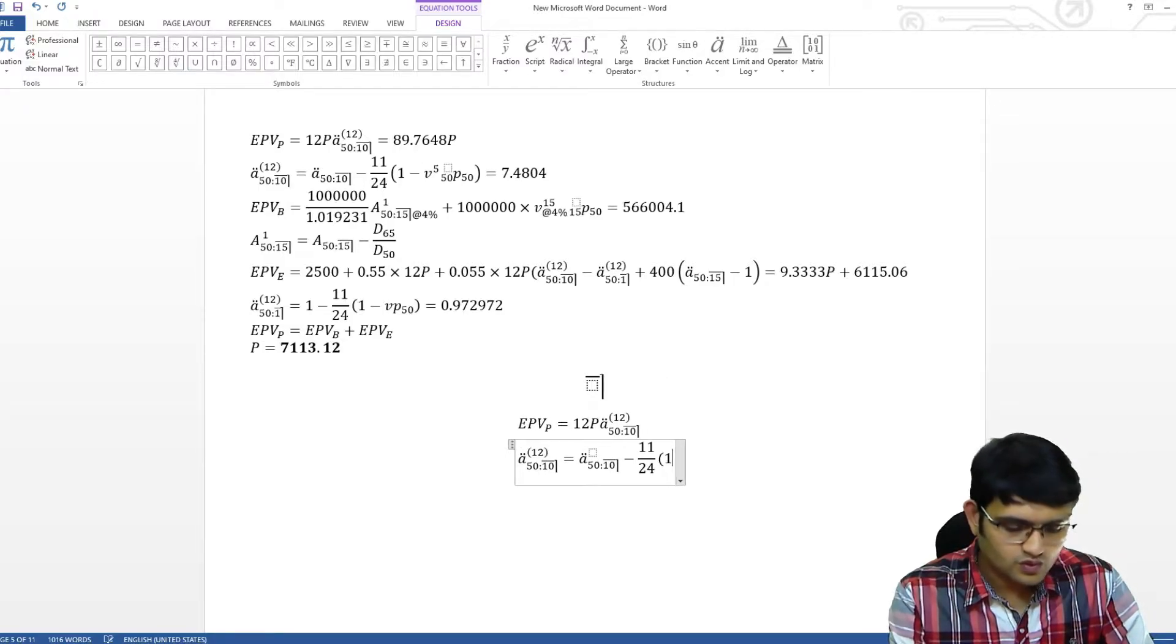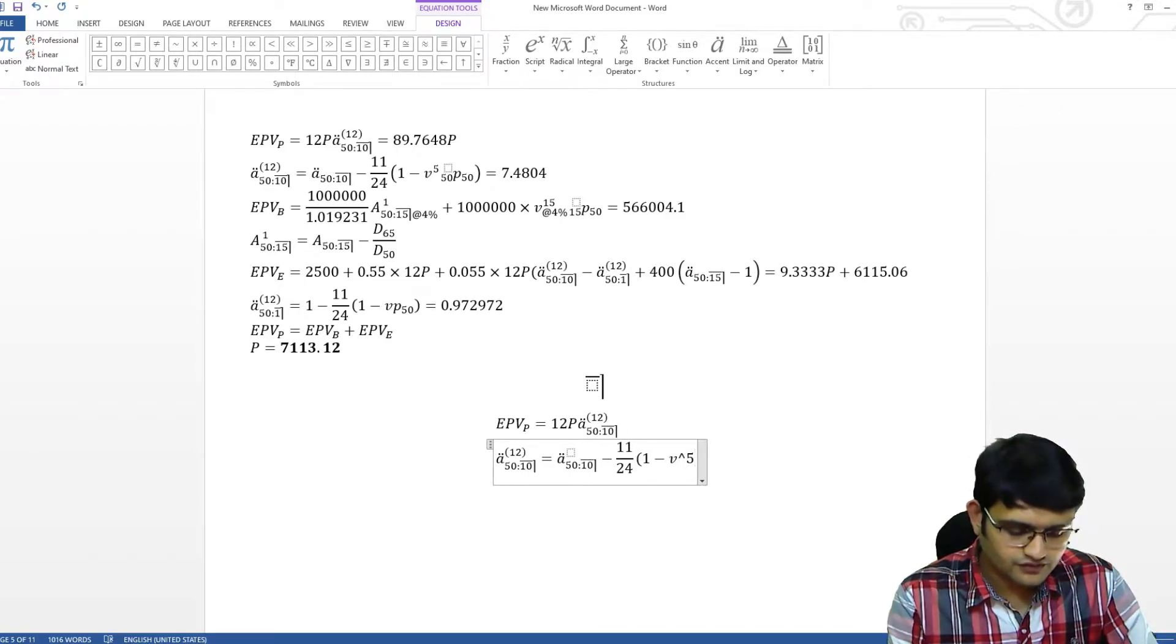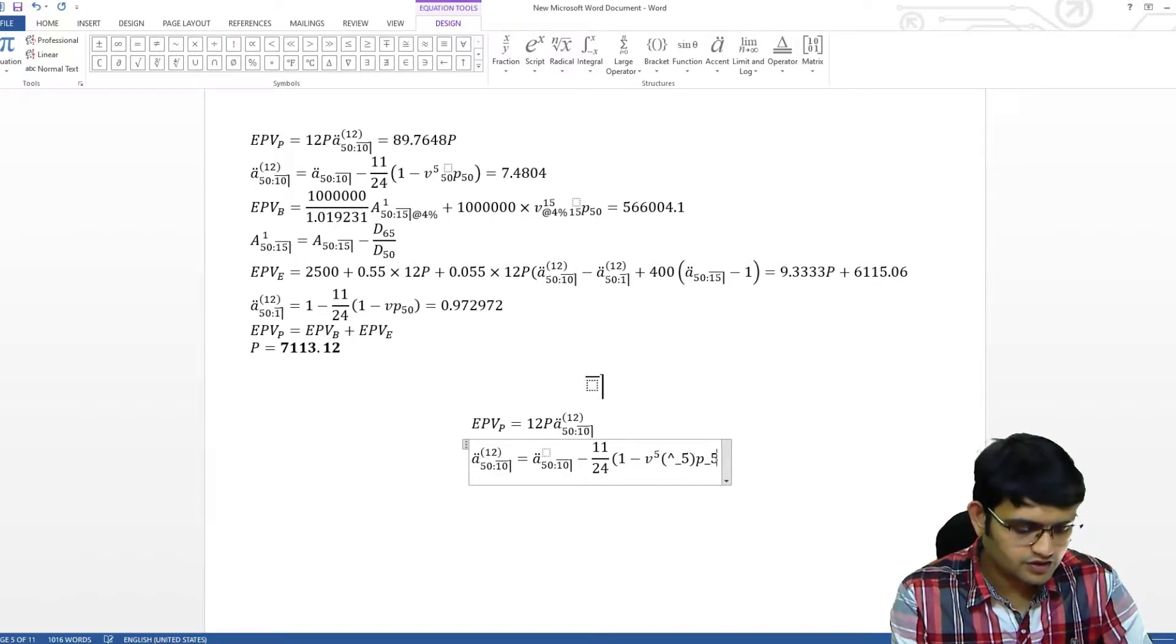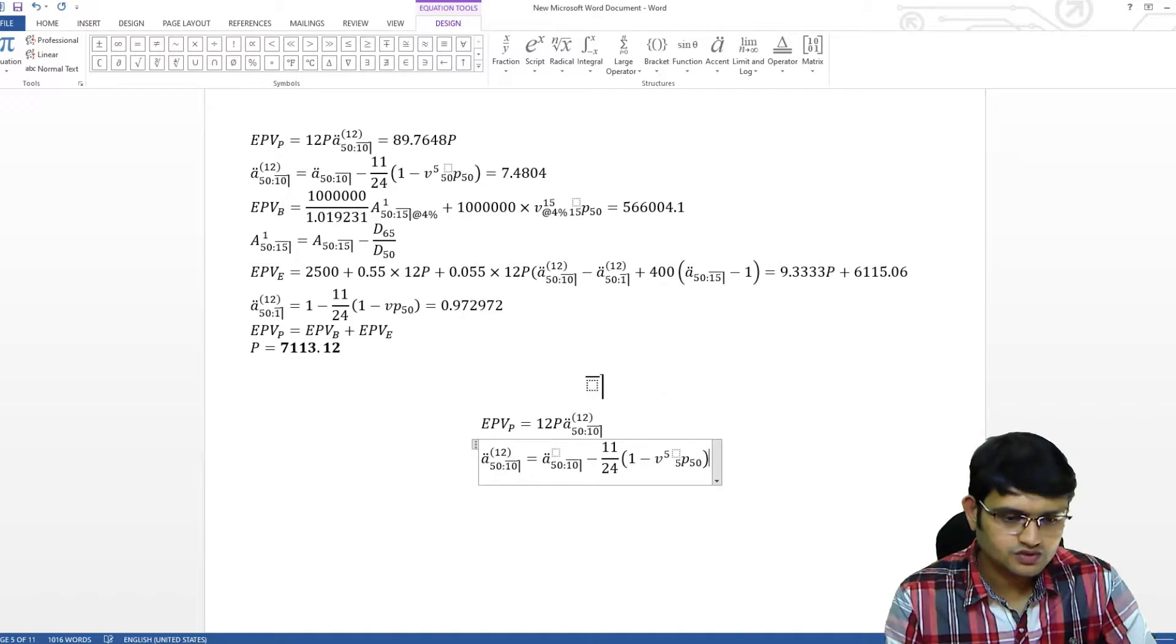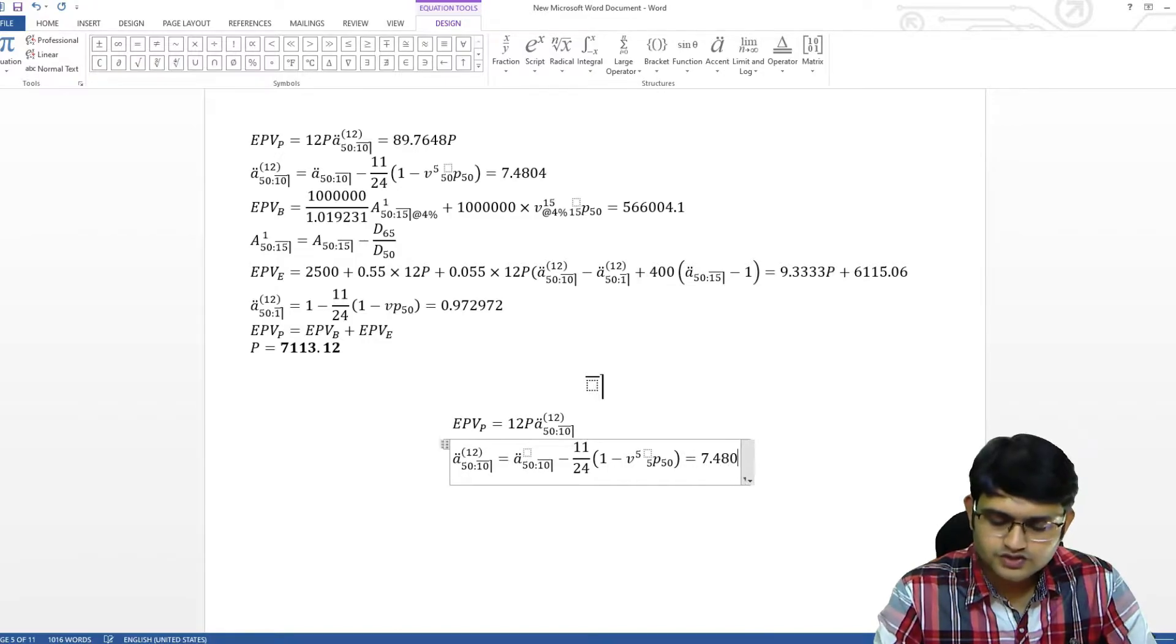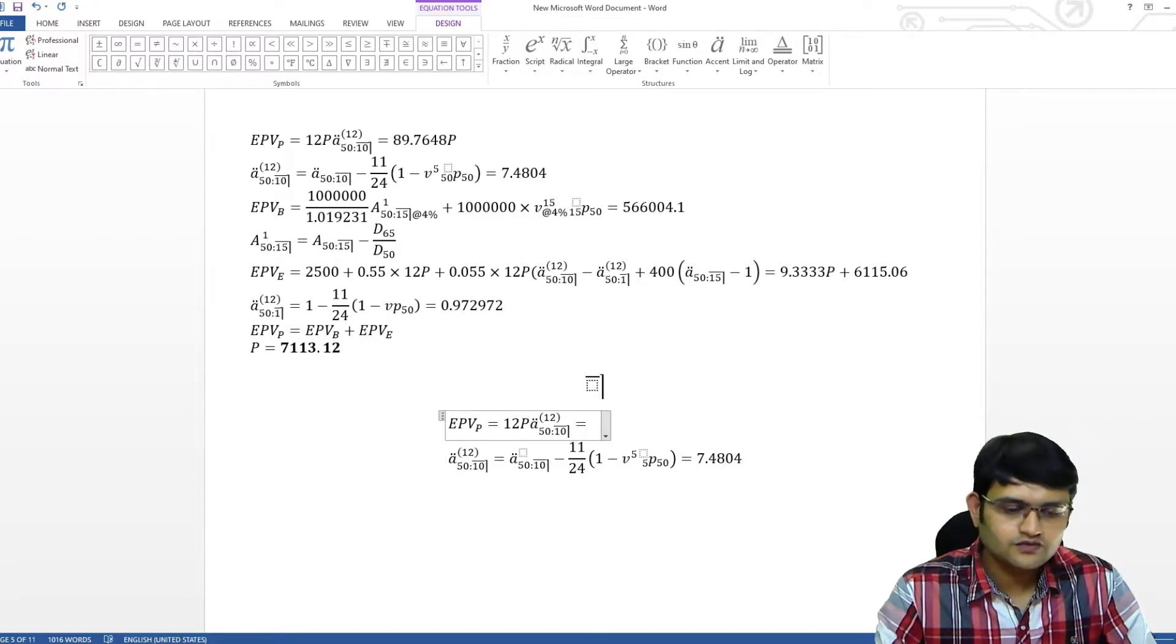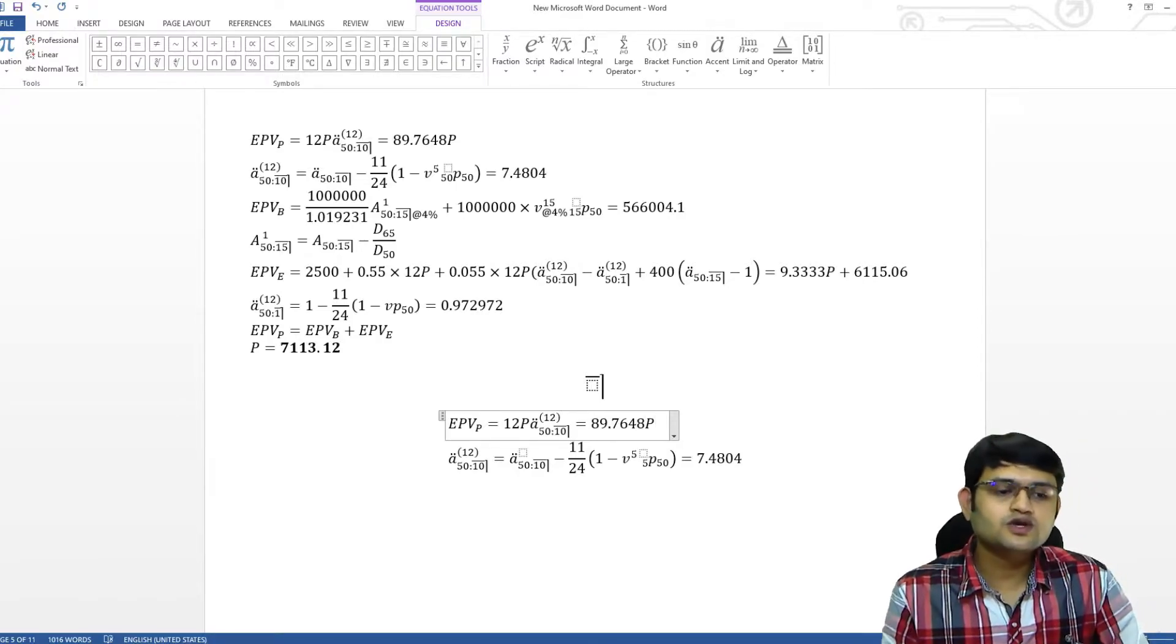1 minus V raise to 5, space and then 5 P 50, bracket close. So, this term is nothing but 7.4804 and then using that, we can find this and we'll get 89.7648 P. So, this is how you will make your equation.